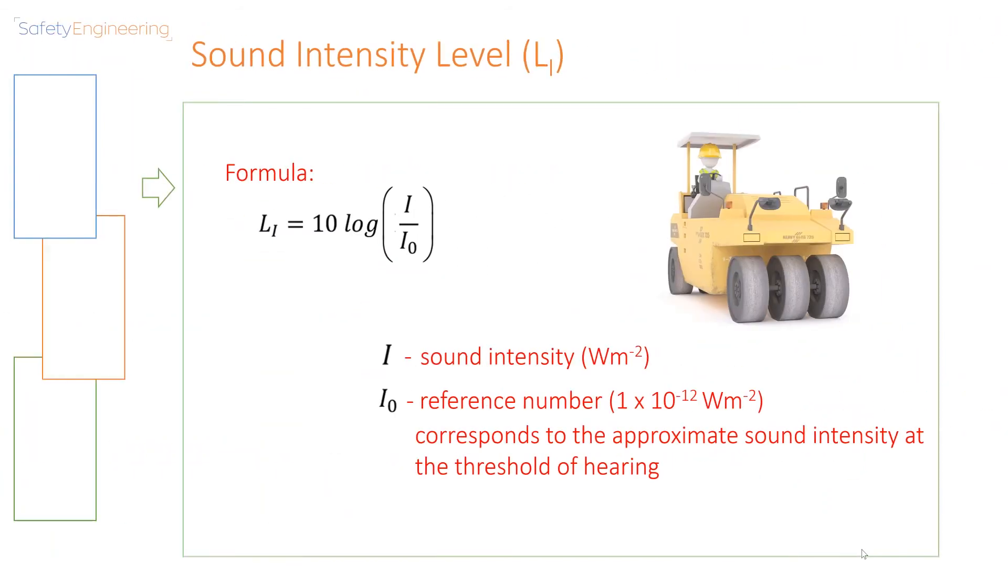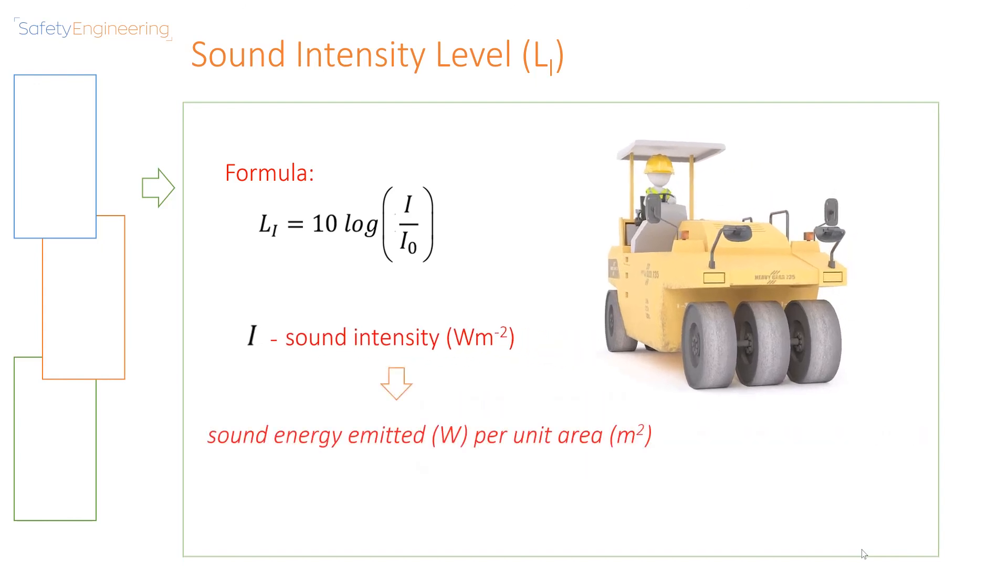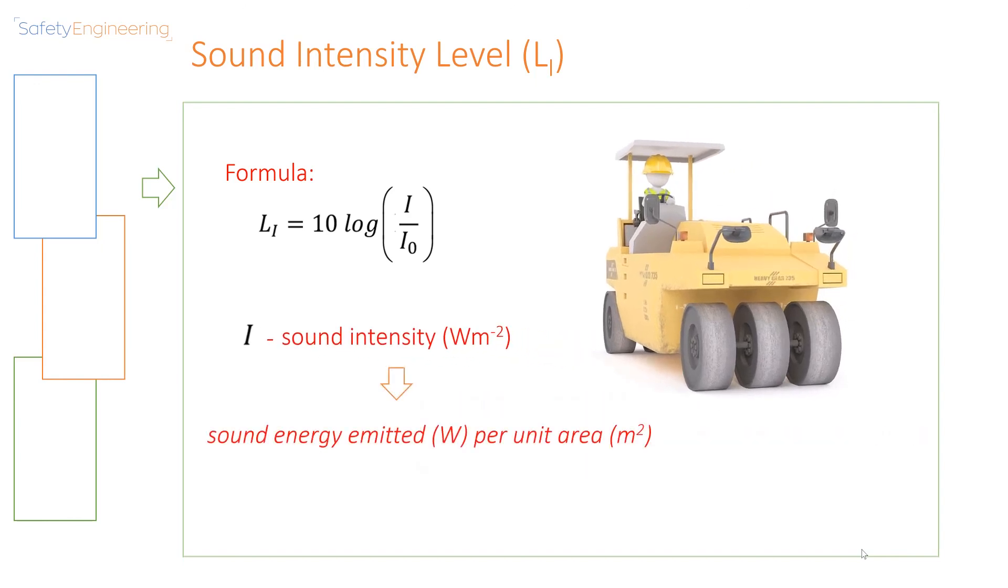The last formula that we are going to examine would be sound intensity level. I is equal to sound intensity measuring watts per square meter, and I0 is a reference number, also 1 by 10 to the minus 12, however the units of this is watts per square meter. This also corresponds to the approximate sound intensity at the threshold of hearing. Sound intensity is the sound energy emitted per unit area.